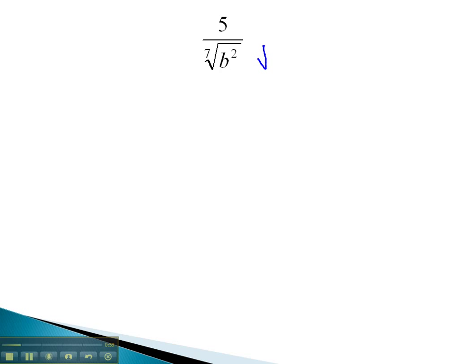So what we will do is multiply by a 7th root by the number of missing factors. We already have 2 b's. We need 5 more to get 7, which we can then divide by the index. And we'll do the same thing in the numerator.